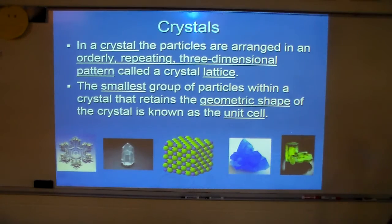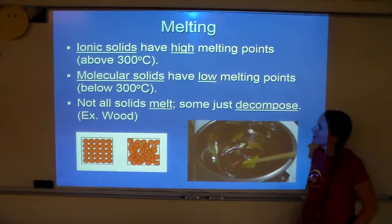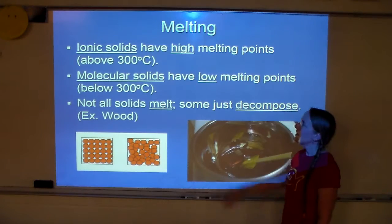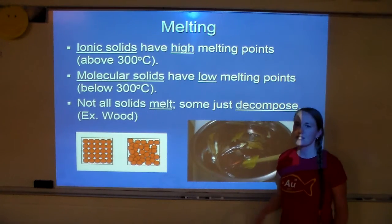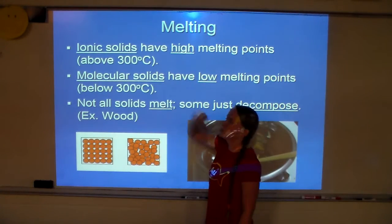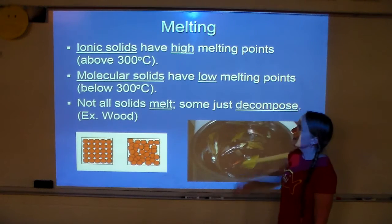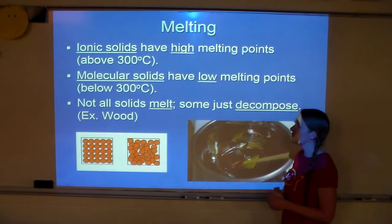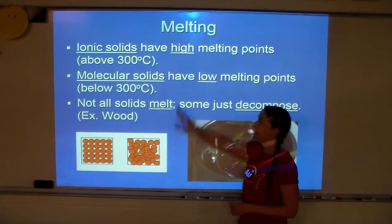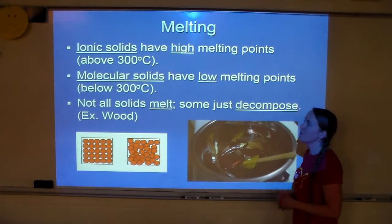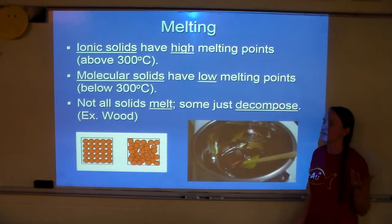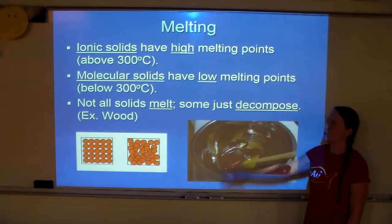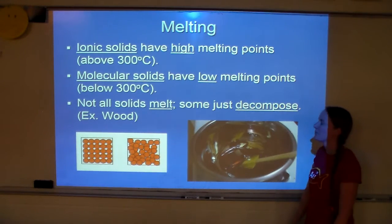Let's look at melting. Ionic solids have high melting points — high is considered above 300 degrees Celsius. Molecular solids, on the other hand, have low melting points, which is considered below 300 degrees Celsius. We learned this back in chapters 7 and 8 when we first started talking about the difference between ionic and molecular compounds, so hopefully this is a review.